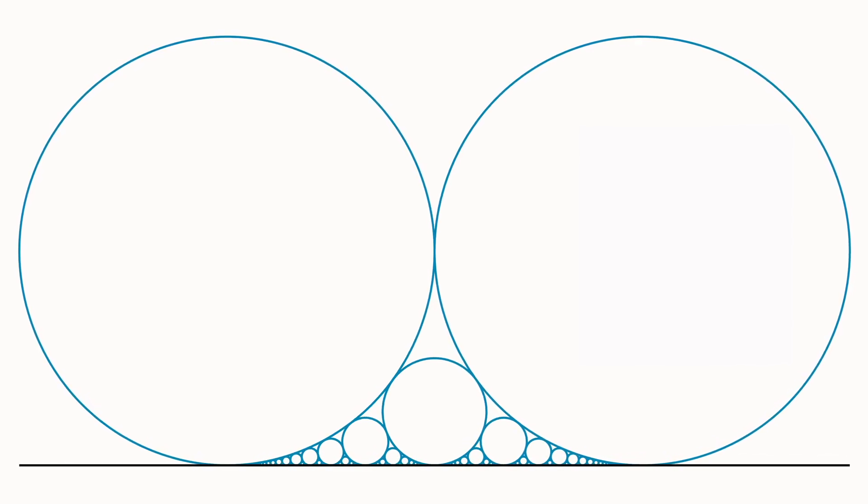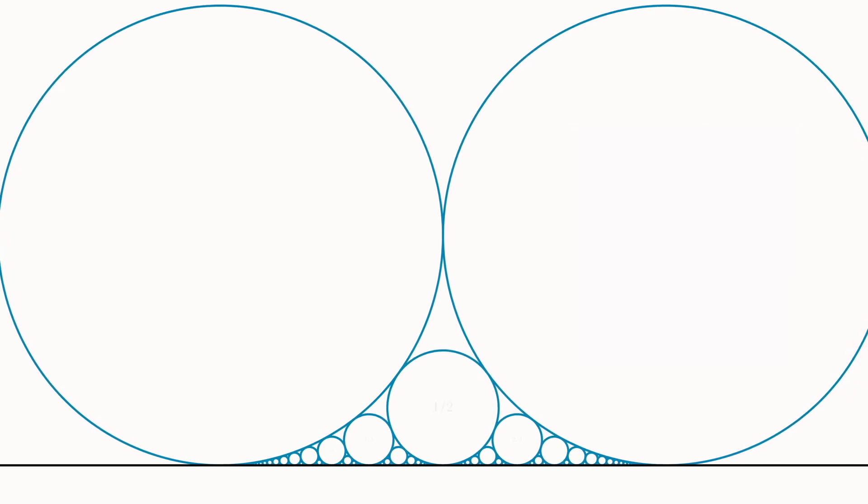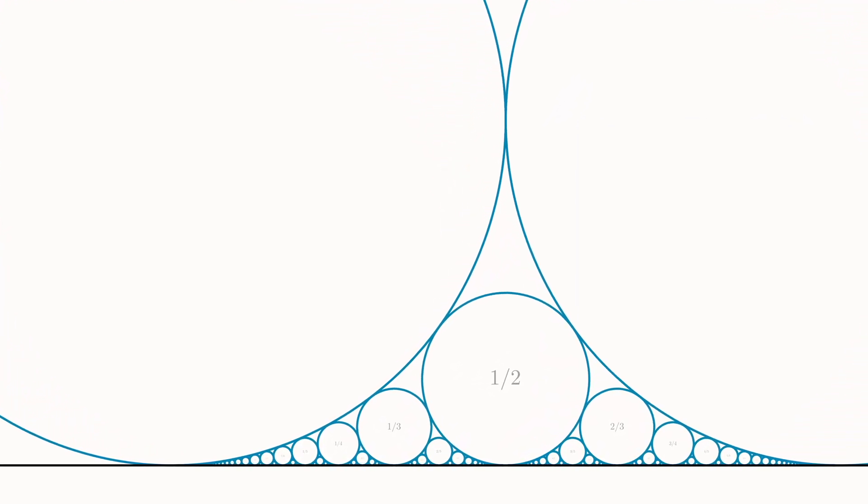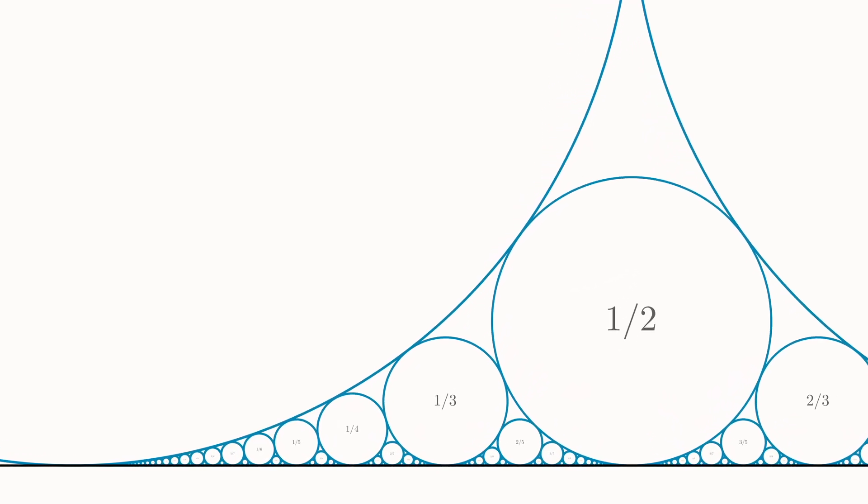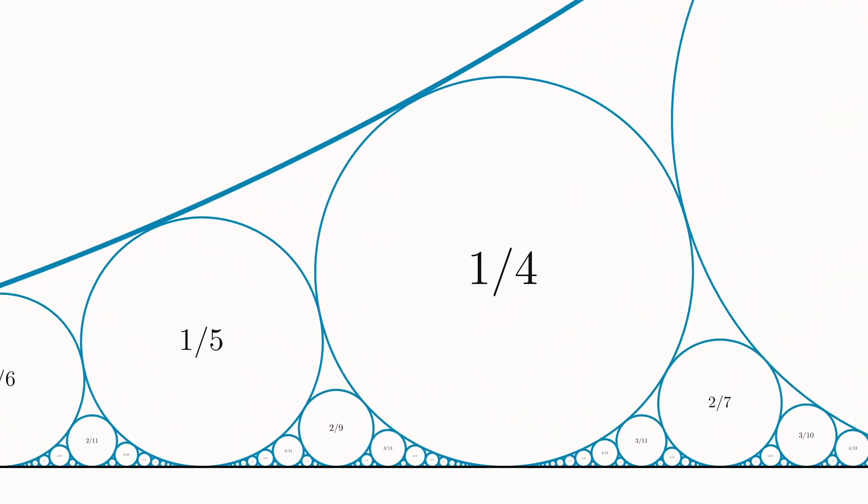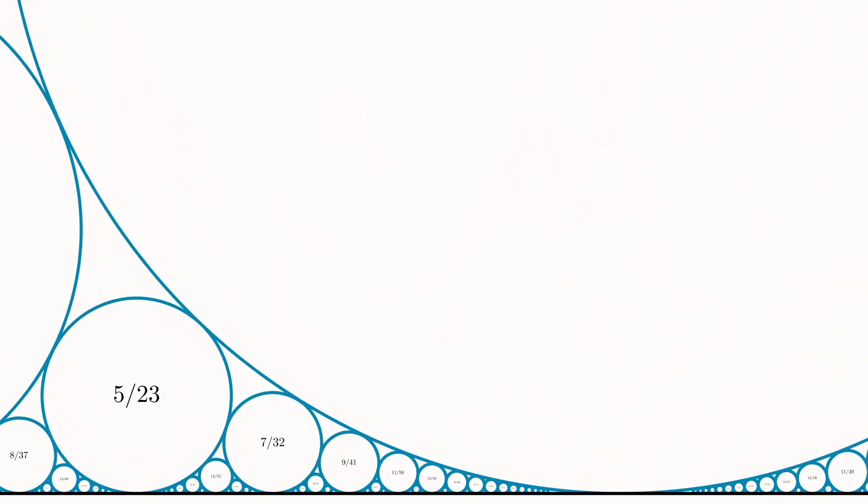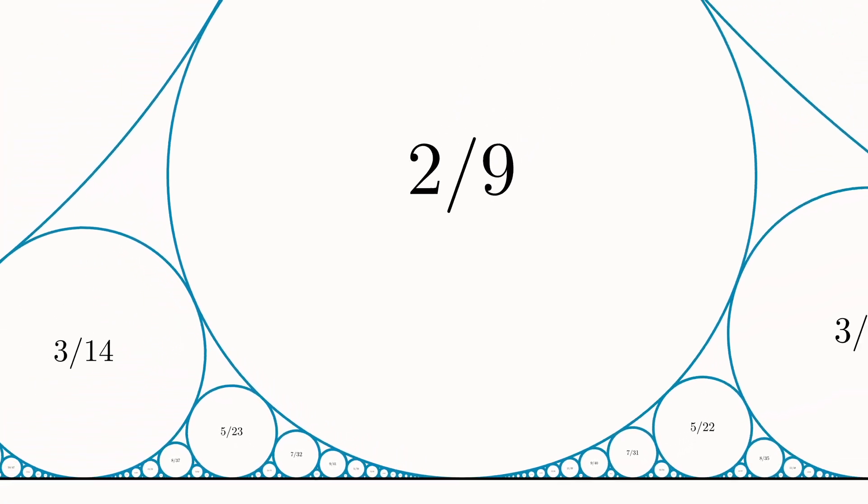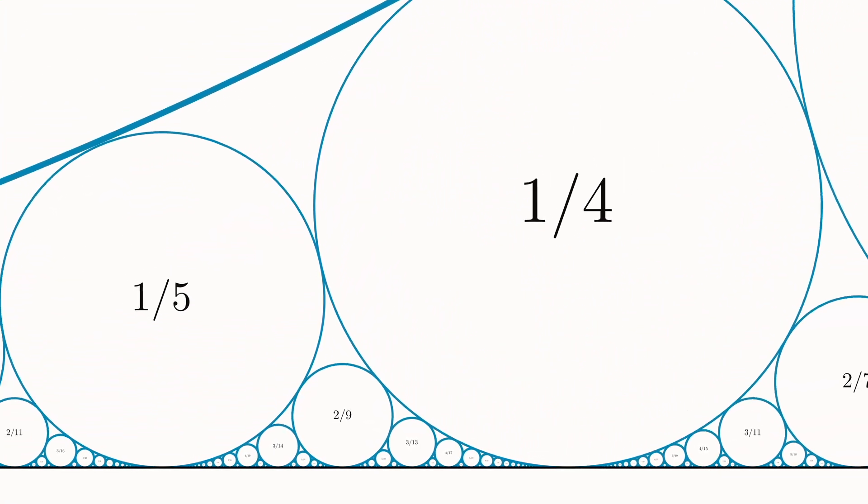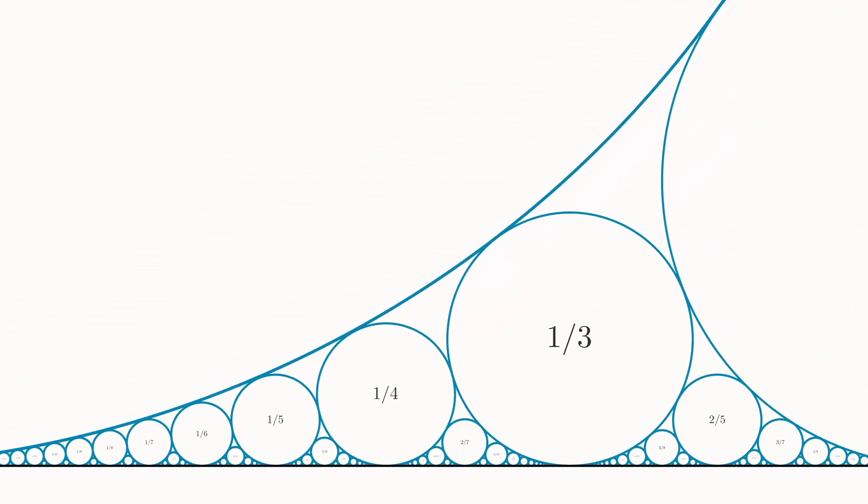These are Ford circles. No matter how far down you go, the fractal pattern never ends. Every single circle is tangent to two other circles, and at the same time is tangent to the number line below. The most amazing thing about this is that each circle always touches the line at one and only one rational point. There is no circle that touches the line at any irrational point. This means that this set of circles gives us a geometric representation of the set of rational numbers.